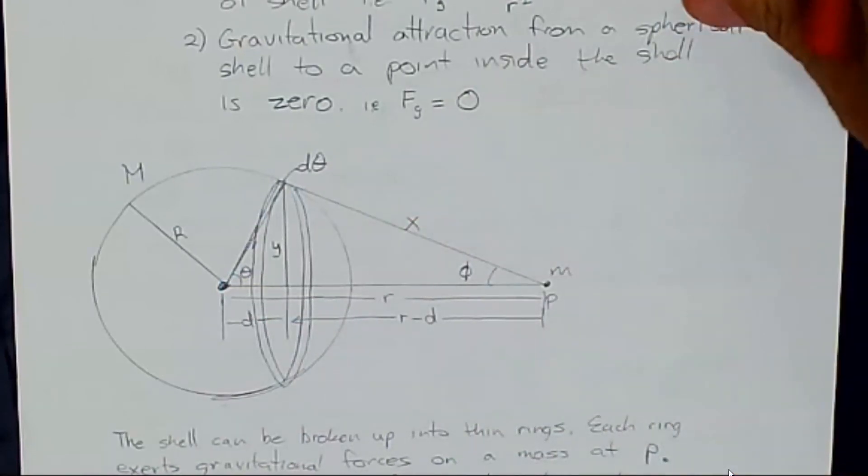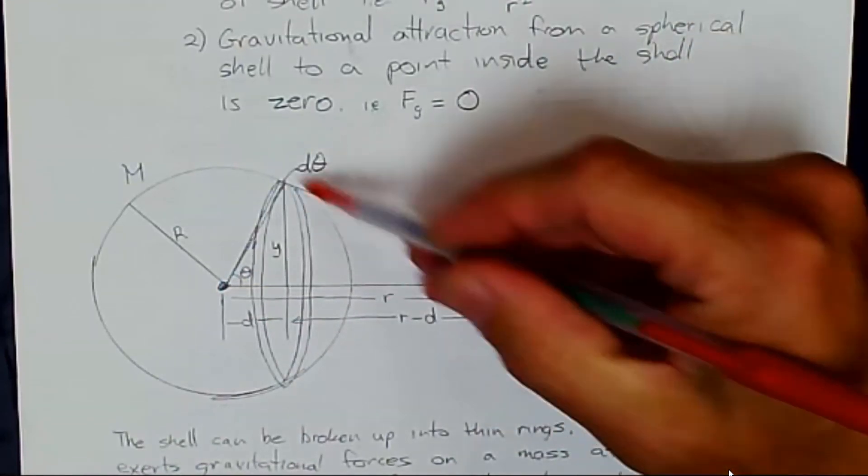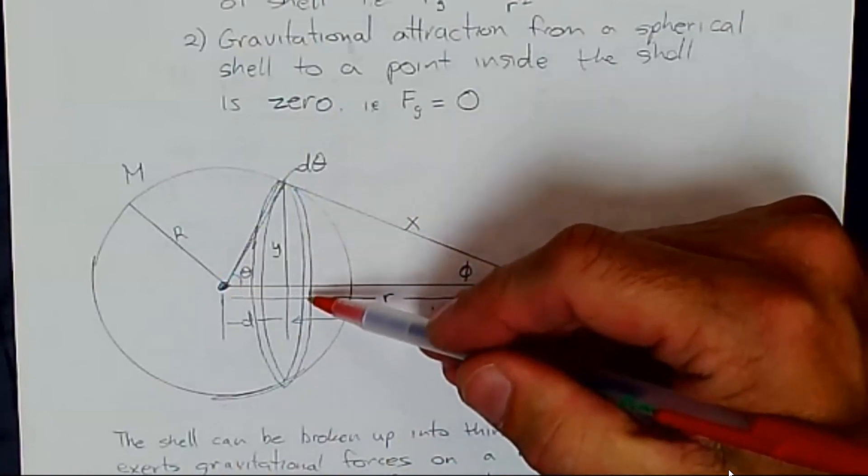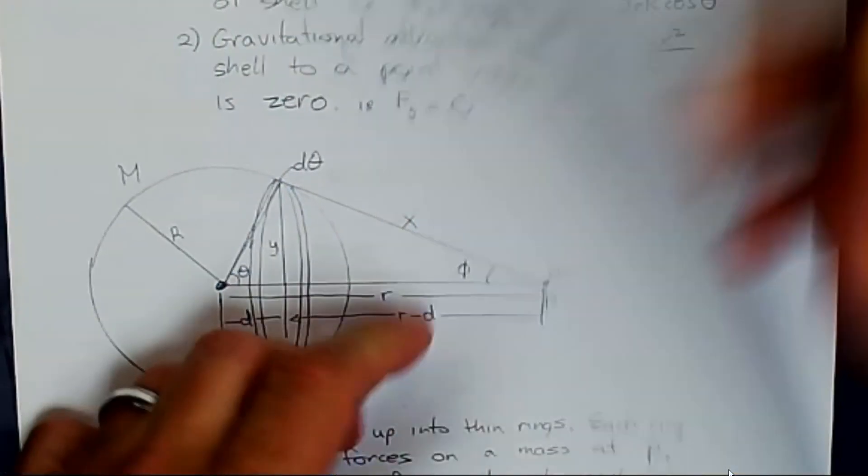So basically what we do is we break the shell up into many, many rings.